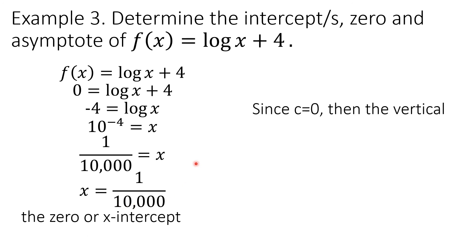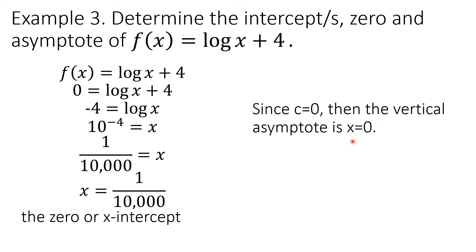Since c equals 0, the vertical asymptote is located at x equals 0, which is a line that coincides with the y-axis. The graph will get closer and closer to this line but will not intersect it. Since the graph does not intersect the y-axis, there is no y-intercept.